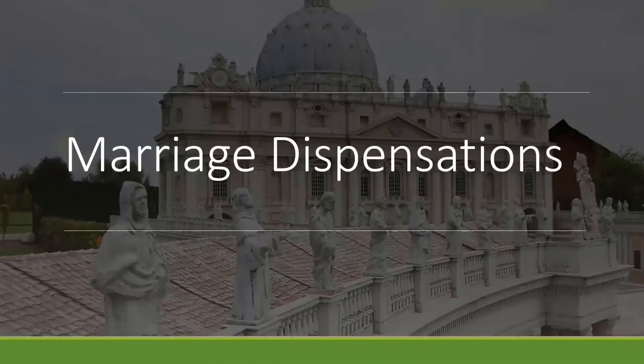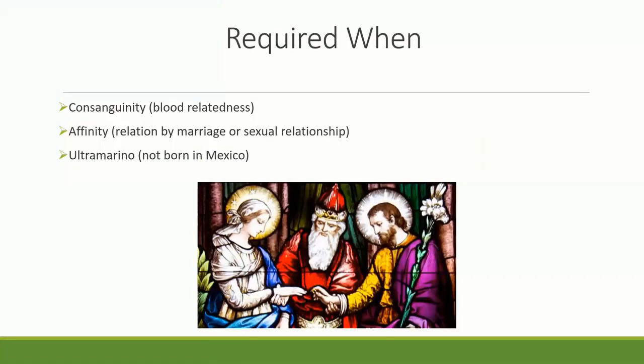Now we're going to talk about marriage dispensations. They were required when there was consanguinity — blood-relatedness. When there were second or third cousins, they had to have one done. I've even seen it in cases of fourth cousins. Also affinity — relation by marriage or sexual relationship. And if there were ultramarinos — basically people not born in Mexico — a marriage investigation would have to be conducted to make sure that person was not already married elsewhere.